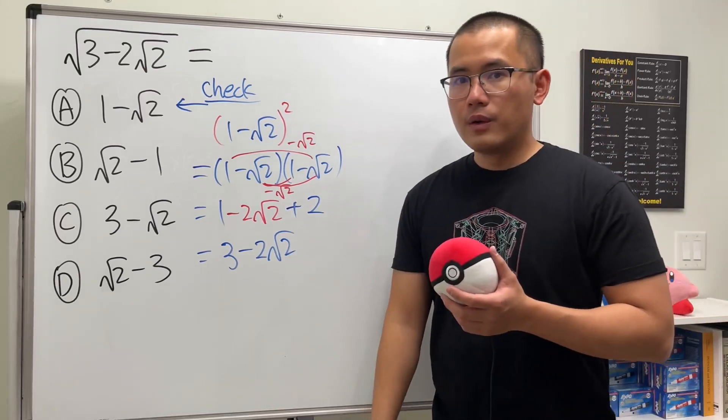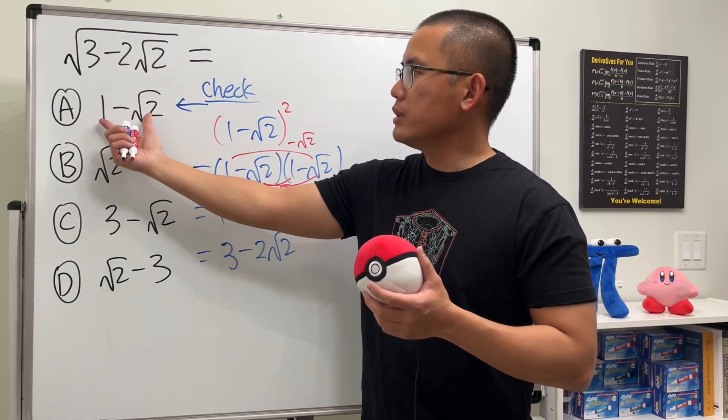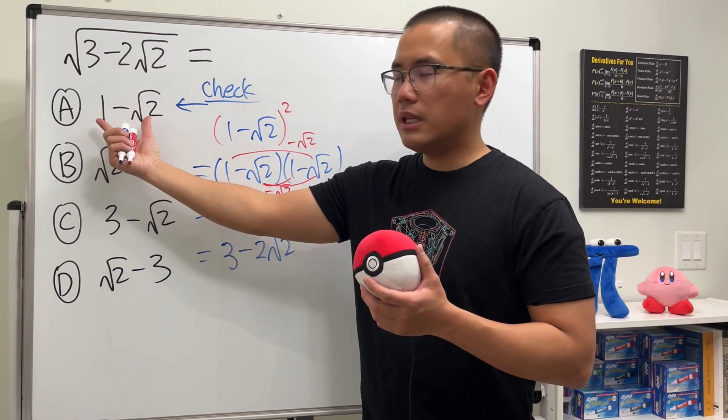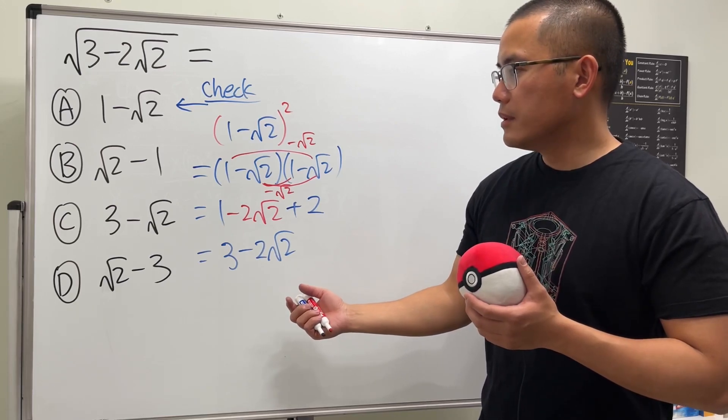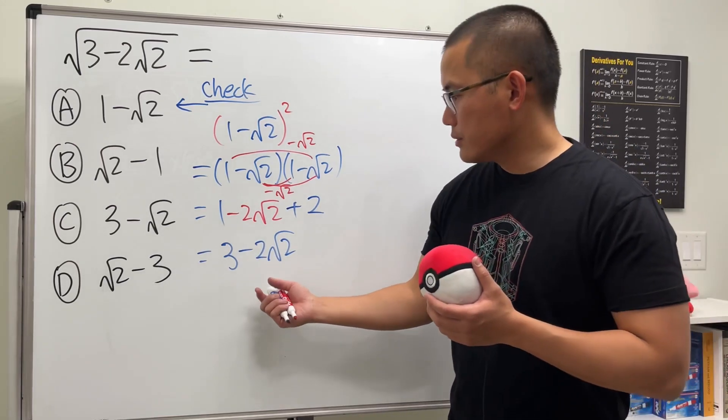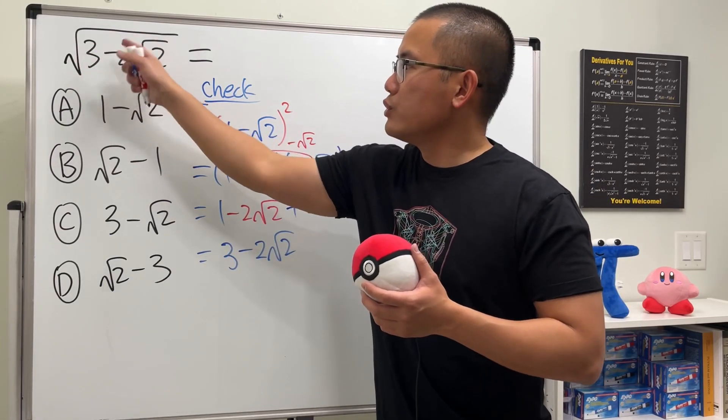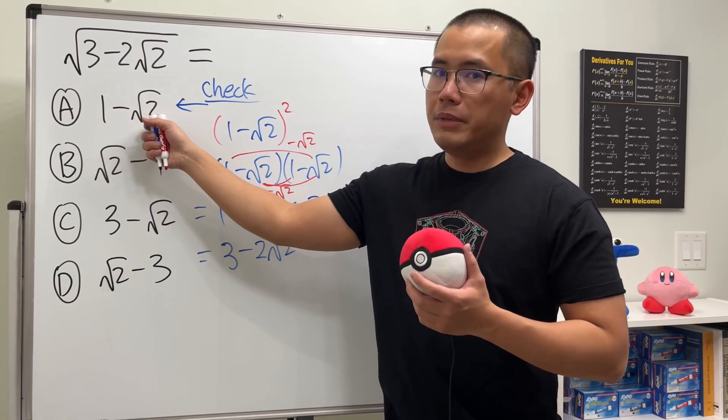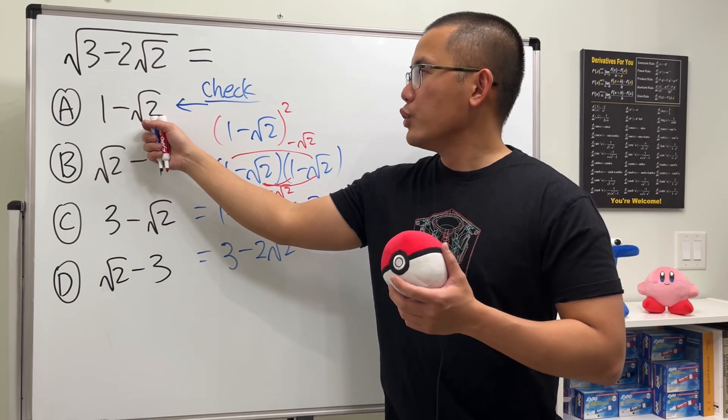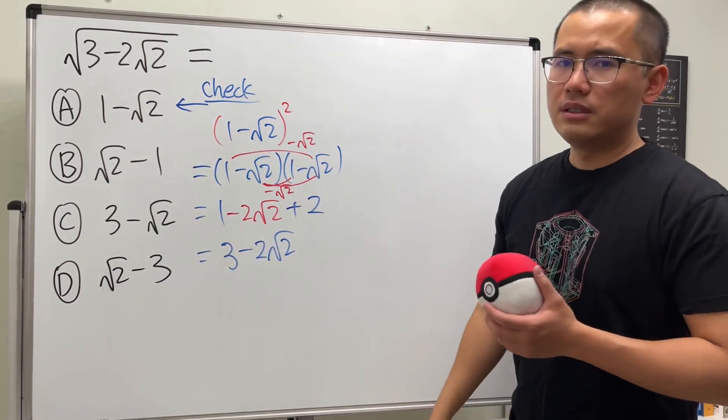We are done because the output of the square root is this, meaning based on this we're done. When we are talking about the square root of something, we are trying to see if we square the answer, do we end up with the inside? And we did end up with the inside, so this is the correct answer.